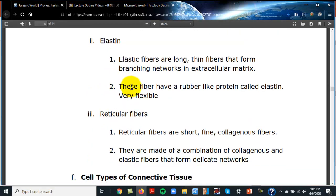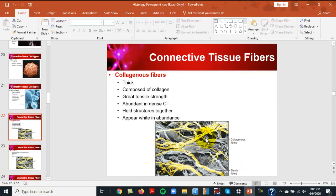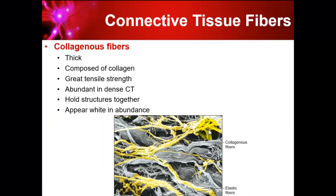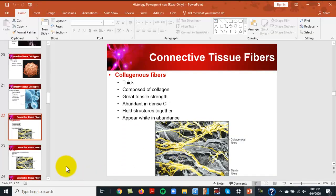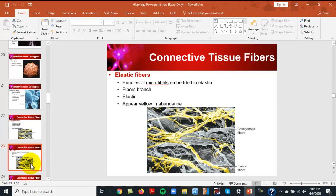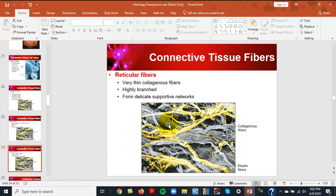Elastin fibers contain a protein called elastin and stain a yellowish color. They are not as strong as collagenous fibers but are much more flexible. The outer ear, vocal cords, and other areas that need to stretch have a high abundance of elastic fibers.